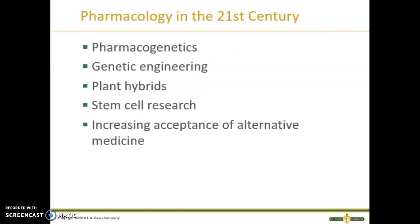Now looking at pharmacology in the 21st century: Pharmacogenetics uses a patient's genetic makeup to determine how they will respond to specific medications, allowing for individualized treatment. Genetic engineering can alter the source of drugs, allowing more to be produced. Plant hybrids may make taking multiple drugs unnecessary since scientists are able to combine drugs. Stem cell research is alive and well and will continue to have an impact on disease and treatment.